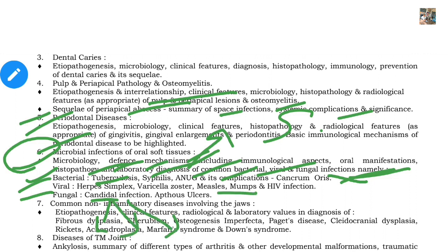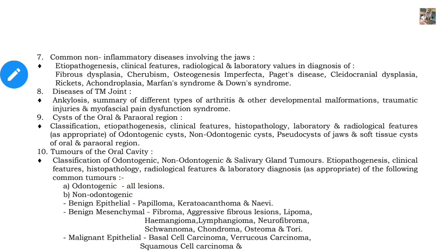Aphthous ulcers are very important from a 5-mark perspective. Next are common non-inflammatory diseases — these are congenital conditions, not caused by infection. Important topics include fibrous dysplasia, cherubism, osteogenesis imperfecta, Paget's disease, cleidocranial dysplasia, rickets, achondroplasia, Marfan syndrome, and Down syndrome — all important for 5-mark questions.